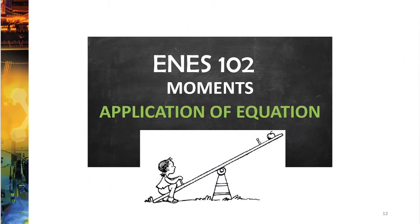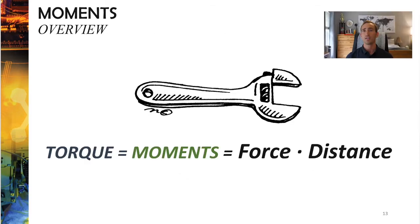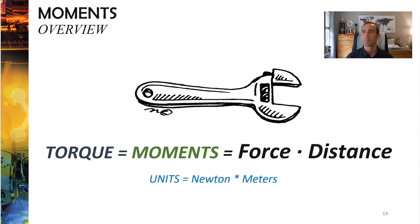Now let's talk about how to apply this equation to ENES-102 problems and in the real world. The equation we use for moments is equal to force times distance. This equation is going to be a little more nuanced than this, and we'll explain that later, but essentially: in order to cause something to rotate, you need to have a force and a distance away from the rotation point. The units are newtons times meters, or pounds and inches.